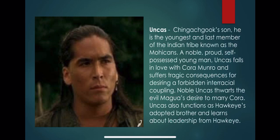Uncas is Chingachgook's son — the youngest and last member of the Indian tribe known as the Mohicans — a noble, proud, self-possessed young man. Uncas falls in love with Cora Monroe and suffers tragic consequences for desiring a forbidden interracial coupling. Noble Uncas thwarts the evil Magwa's desire to marry Cora. Uncas also functions as Hawkeye's adopted brother and learns about leadership from Hawkeye.